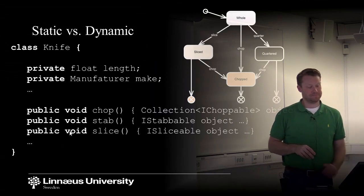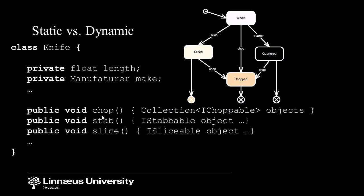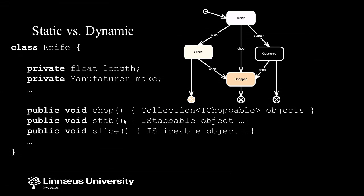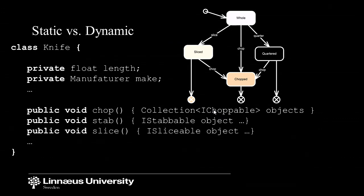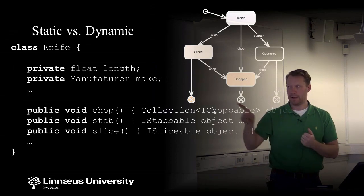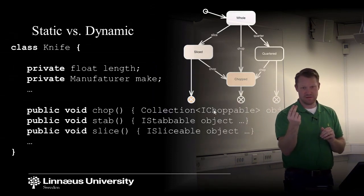Down here we have some source code, and you can start to see that we use implementation-specific models. Our 'chop' function here doesn't say a single word about any tomatoes — we can actually chop anything that is choppable. Our tomatoes will be choppable because we will implement a choppable interface. It's a model that is getting further and further from the real world, but still, the behavior we're looking for is there.